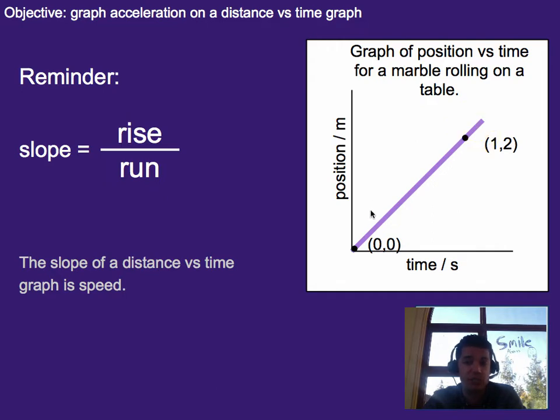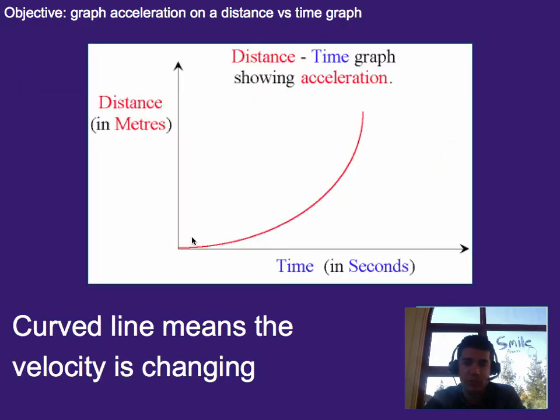If however, you weren't going a constant speed, you would expect the slope to change. It might go from steep to flat. It might go from steep to steeper if it's getting faster. Which leads us into what does acceleration look like on a distance-time graph?